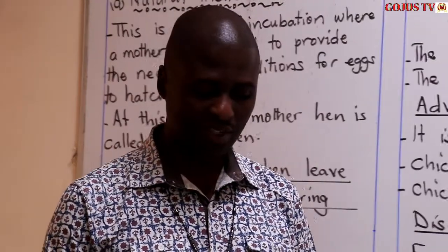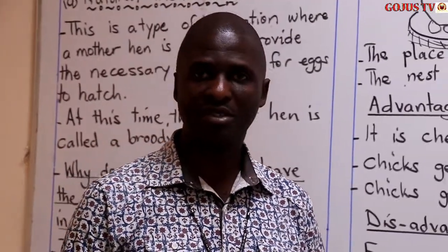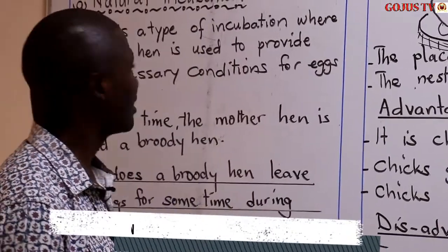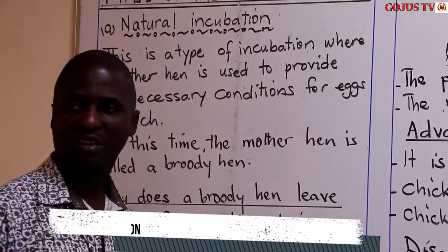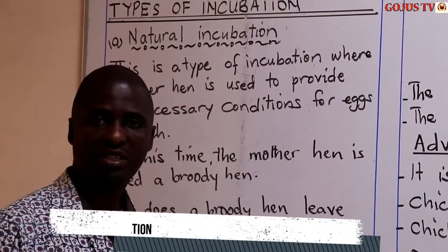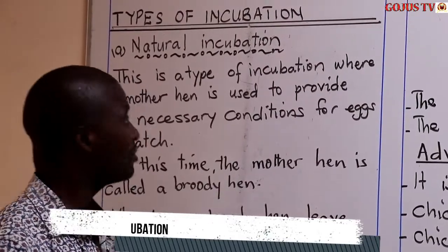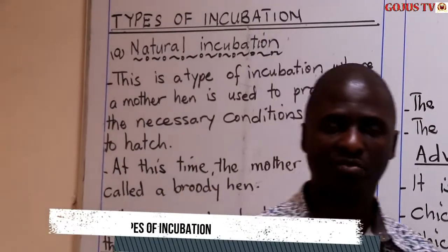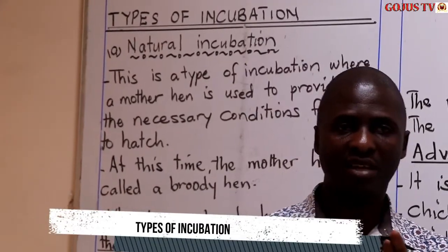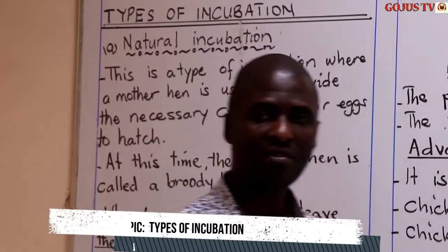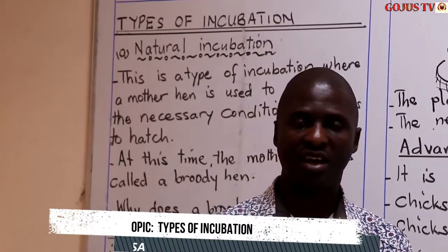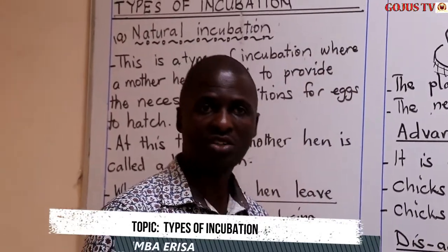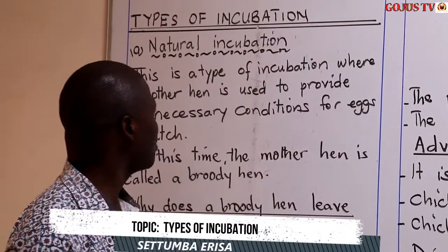Hello Primary 5 children, you are most welcome to our second lesson of science. The other time we were together in the previous lesson, we looked at incubation. Right now we are going to look at types of incubation. There are two types of incubation: we have natural incubation and artificial incubation. In this lesson we are going to look at natural incubation.